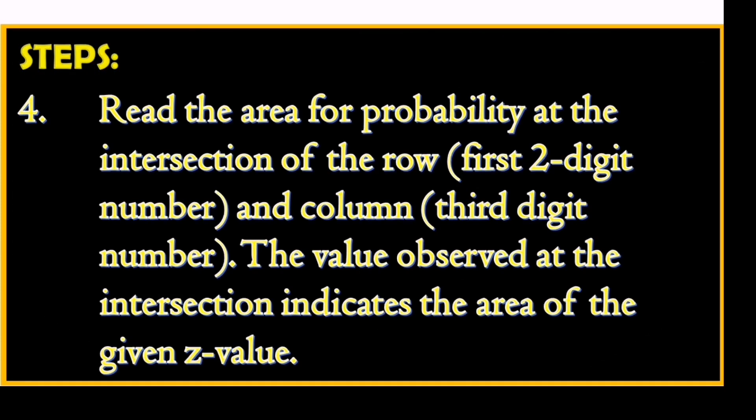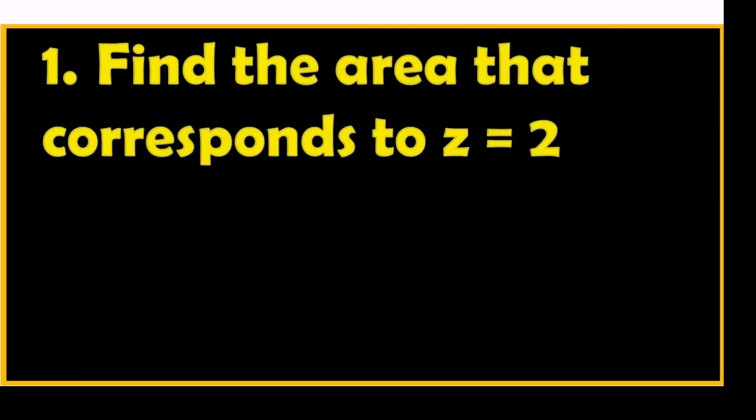Step 4: Read the area for probability at the intersection of the row (first two-digit number) and the column (third-digit number). The value observed at the intersection indicates the area of the given z-value. Step 5, Example 1: Find the area that corresponds to z equals 2.